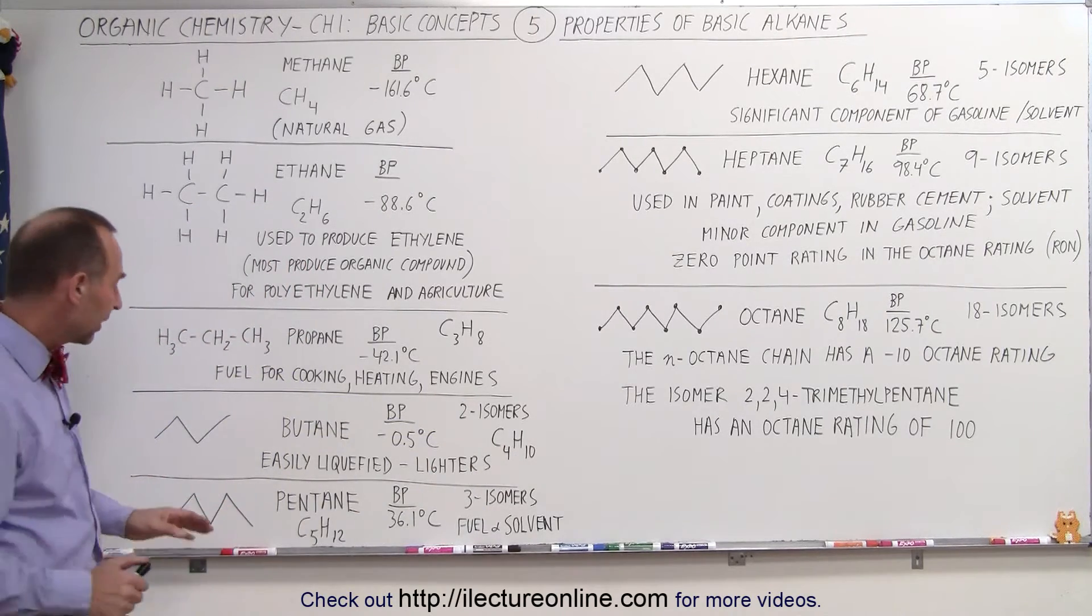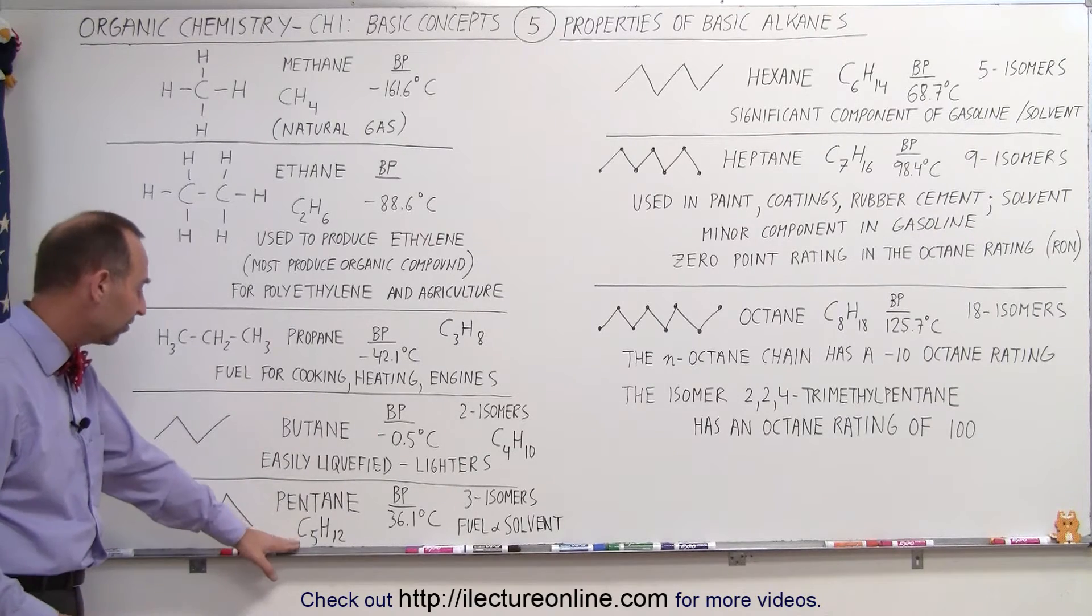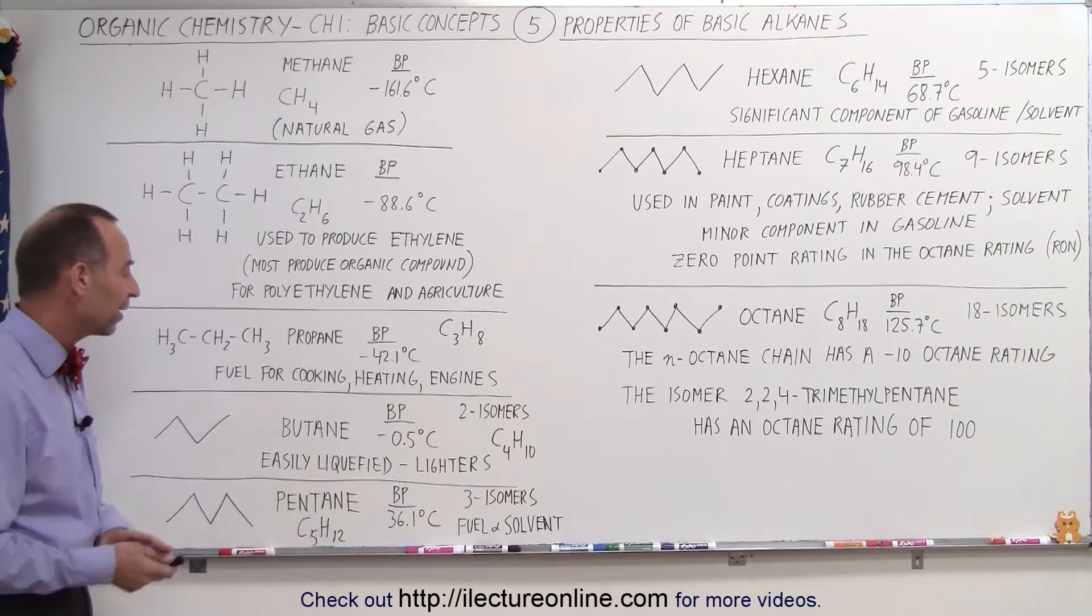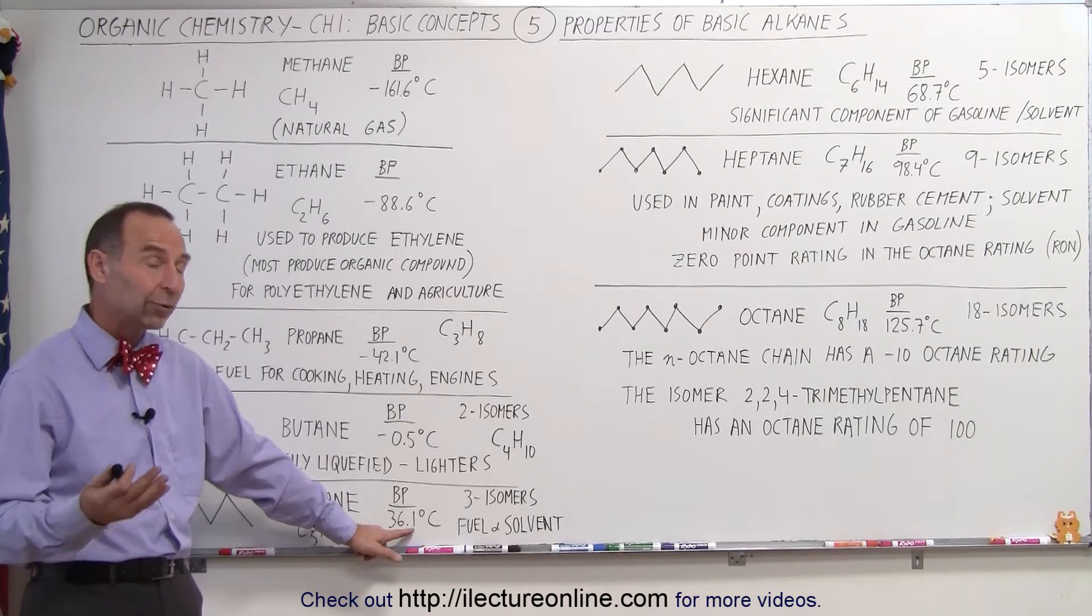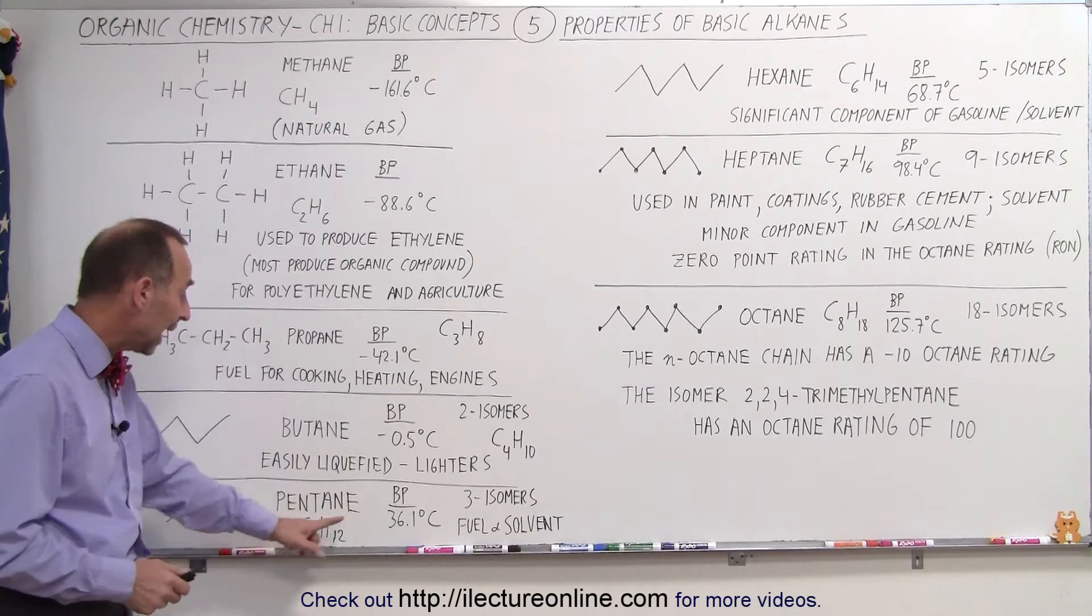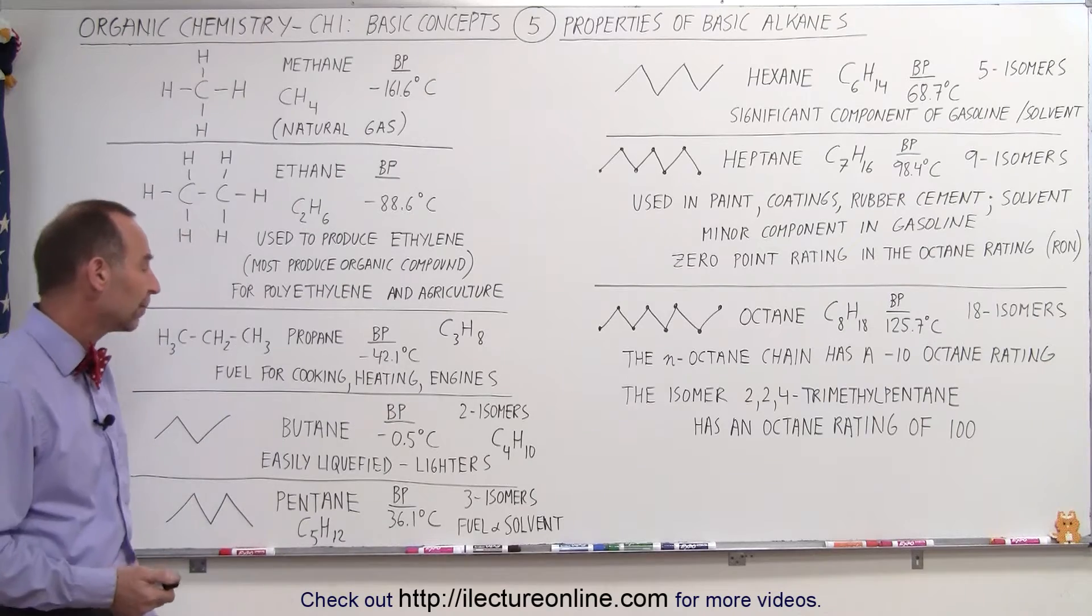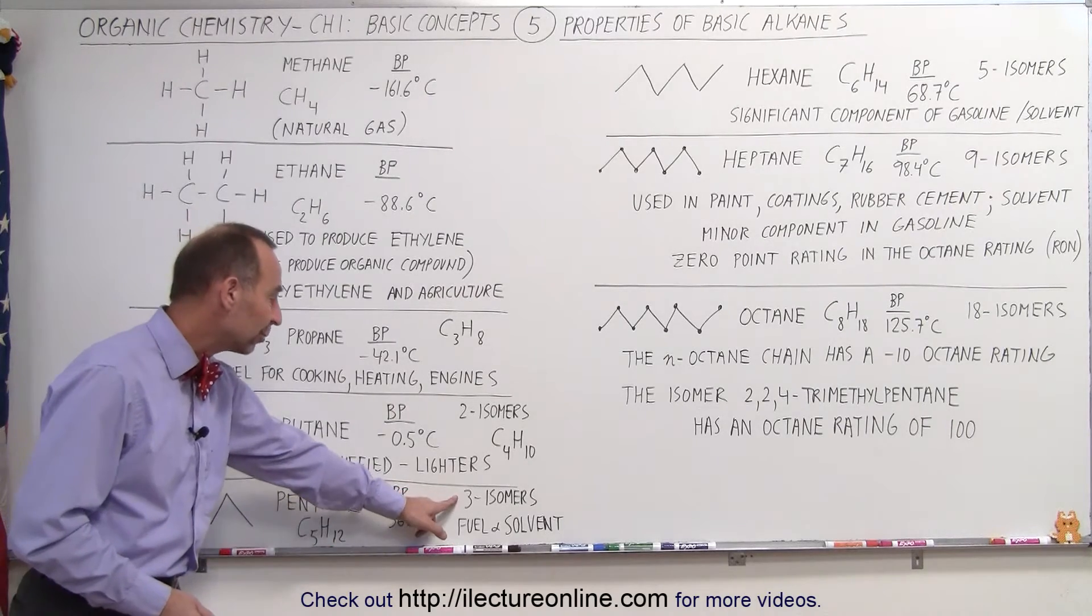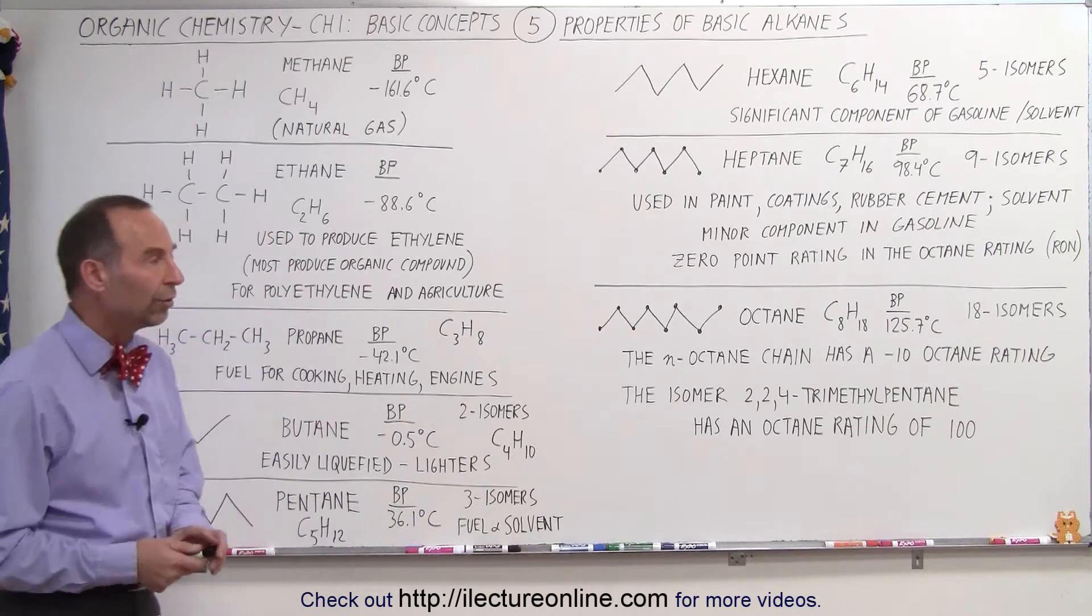The next organic molecule in the alkane set is pentane. Pentane has five carbons and 12 hydrogens. Notice its boiling point is 36.1 degrees centigrade so at room temperatures pentane will actually be a liquid but above 36 degrees it becomes a gas. Pentane has three isomers and it's used for fuel and it can also be used as a solvent.